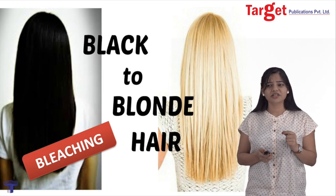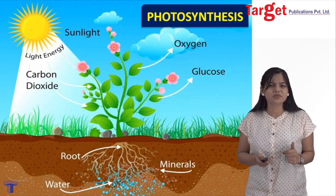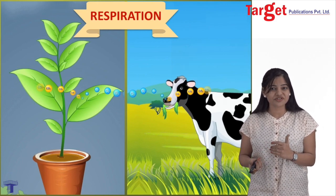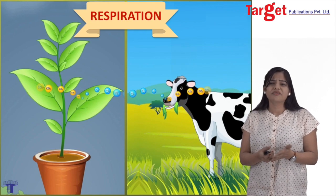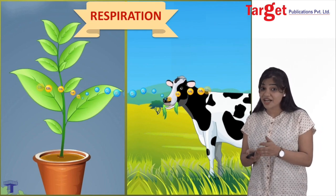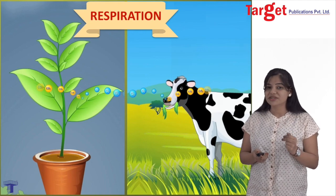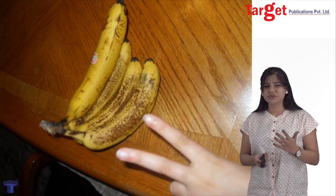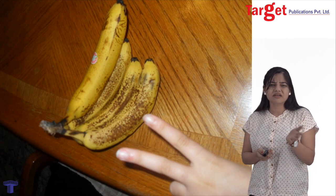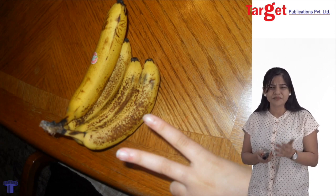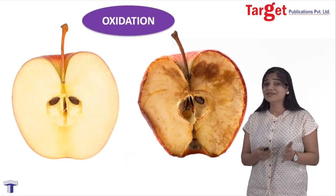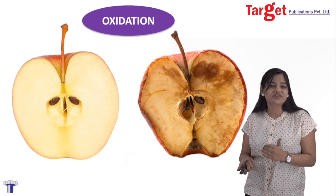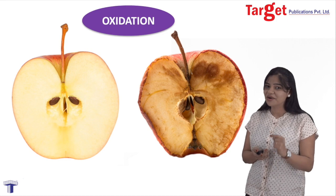Another picture is the photosynthesis process and the next one is respiration. In our lower classes we have already studied these reactions and we often use these terms when we study biology. But actually, what are these reactions? They involve redox reactions. The next picture is the degradation of bananas. Whenever you go to the kitchen, you see that after a few days fruits turn black — that process, in chemical terms, is called an oxidation reaction, which is again a part of redox reaction.